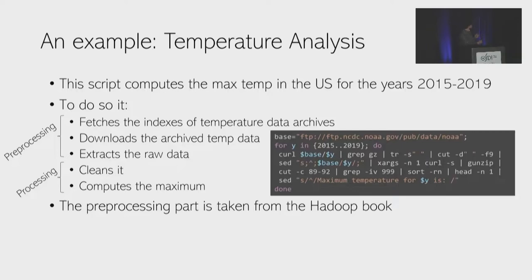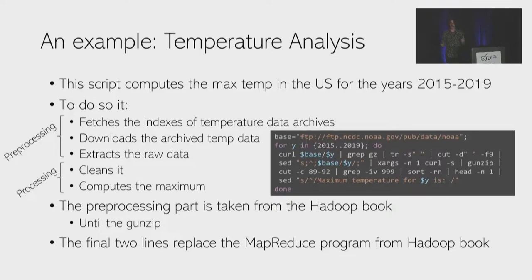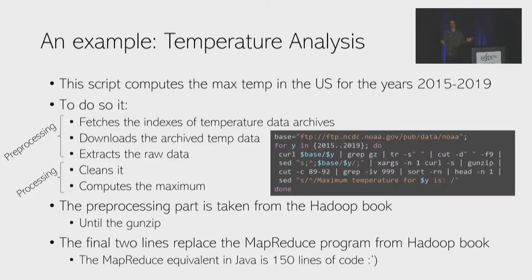The final two lines replaced the MapReduce program in the Hadoop book, and that program was actually equivalent — 150 lines of Java code. This feels really easy to compute the maximum temperature. So the shell is great, as this script shows. But most shell scripts are sequential.